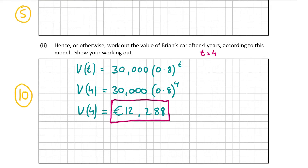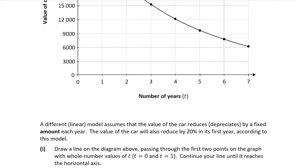Part C introduces a new model. Previously, the car decreased by a fixed percentage of 20% each year. In this new model, the car reduces by a fixed amount in euros every year — for example, going down €3,000 or €5,000 each year — and that fixed euro amount does not change from year to year.